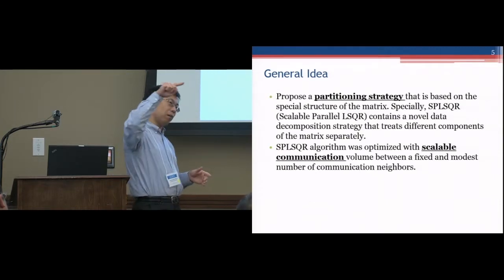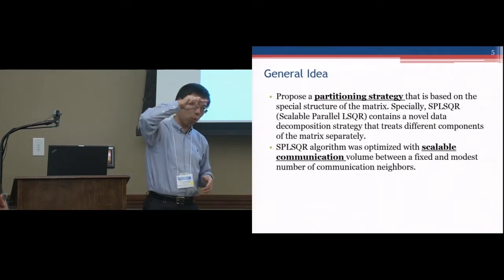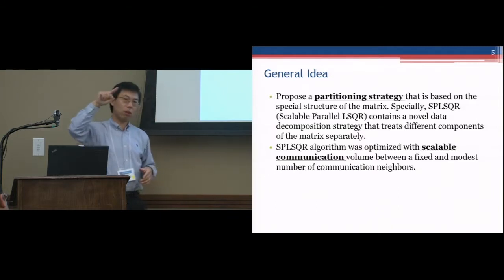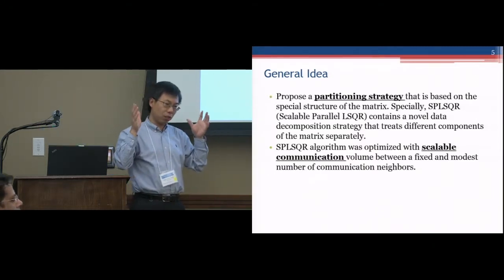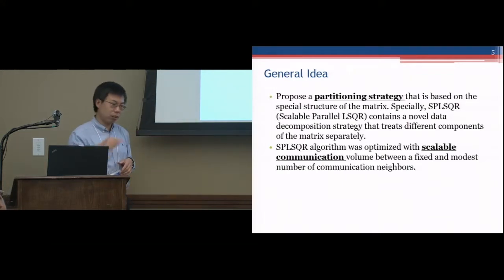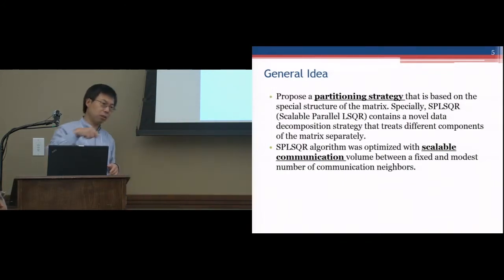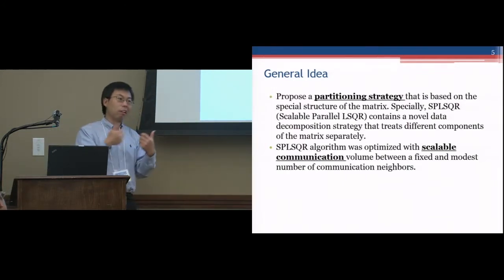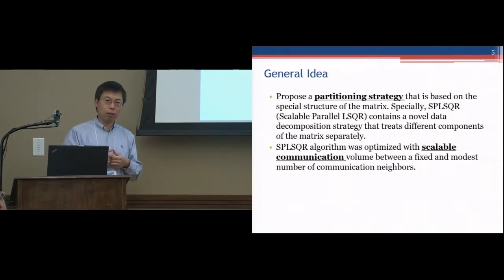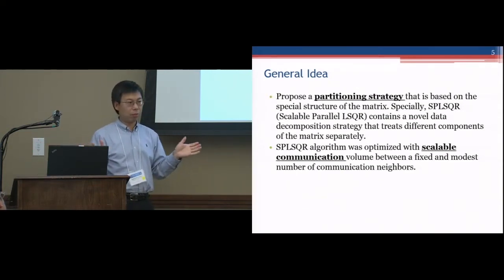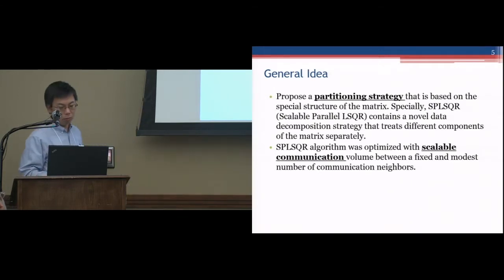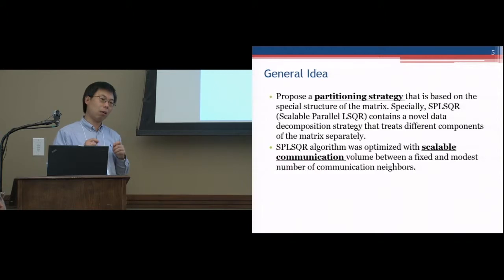Certainly, for every iteration we still have one all-reduce. But this all-reduce is smaller than before, and lots of communication is just local communication. For every node, it just does communication with its near neighbors — not only the left and the right, but also a few neighbors nearby. So most of the communication will be just local. That's a major reason why our approach is more scalable than before.